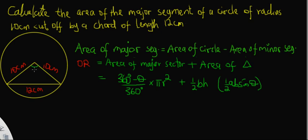Looking at this formula, you would observe that most variables are known. The radius is known, and the value of pi is taken as 22/7, although it is not specified in the question. This is universally accepted. What remains to be calculated is the value of θ and the height h, because the base of the triangle is also known.